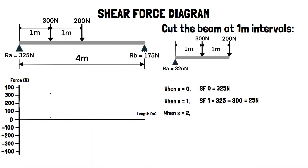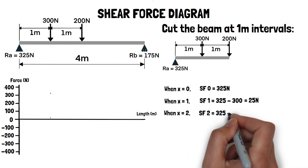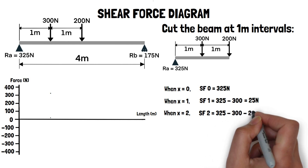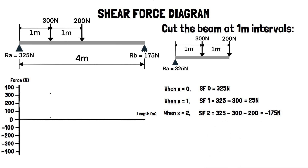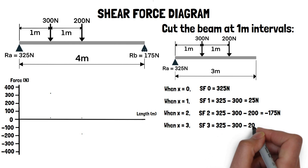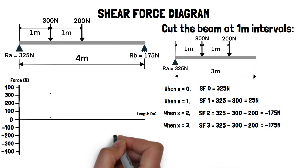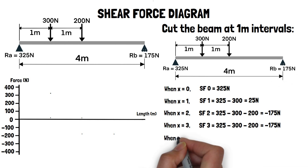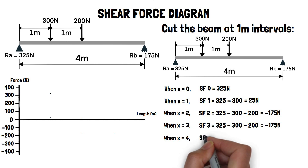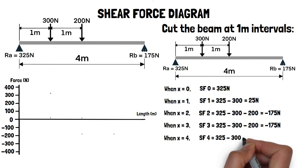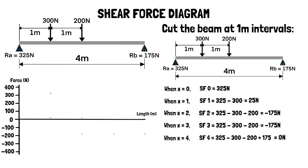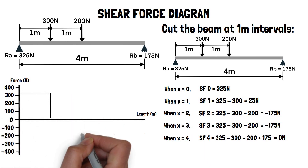When x equals 2, we have the introduction of a 200 newton point load in the downwards direction. The shear force at this point is calculated by 325 minus 300 minus 200, which equals minus 175 newtons. When x equals 3, we have the same conditions as before, so the shear force at this point remains as minus 175 newtons. Finally, when x equals 4, we have the addition of a 175 newton reaction force RB in the upwards direction. So the shear force at this point is 325 minus 300 minus 200 plus 175, which equals zero newtons. By connecting the dots, we get the finished shear force diagram for the beam.